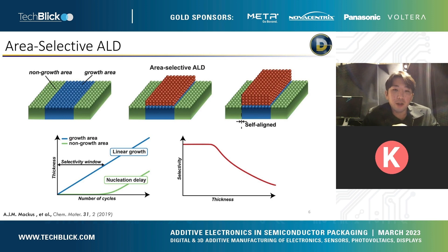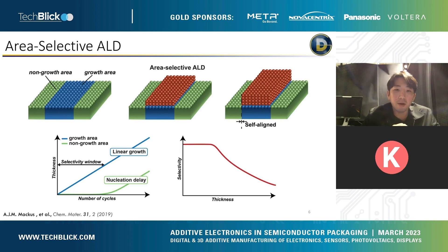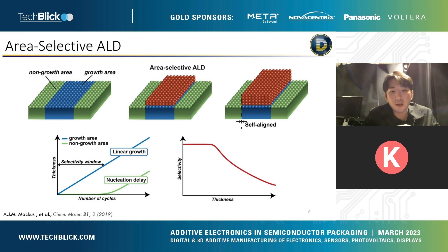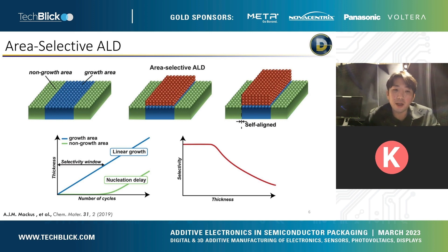This is where we can combine E-jet and ALD. There is a technique called area-selective ALD, where we pre-pattern the surface and define growth area versus non-growth area by taking advantage of thermodynamics. When we pattern the surface with surface functional groups that are thermodynamically unfavorable for ligand exchange during the ALD process, we can delay the nucleation and prevent ALD from growing on the non-growth surface. As you can see in the plot at the bottom, by patterning the surface with the inhibitor, we can achieve a selectivity window — a thickness range in which the surface remains inert towards growth.